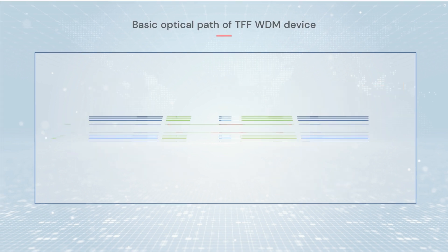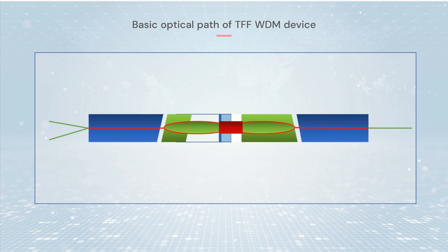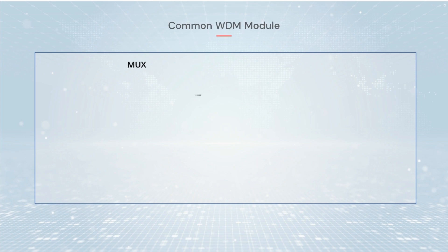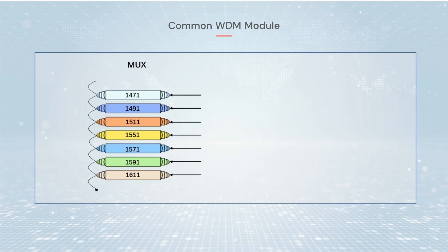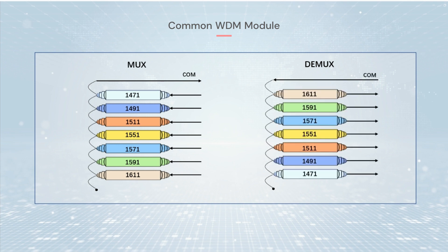WDM signals are input from the comm end. The TFF filter allows one wavelength to be transmitted while other wavelengths are reflected, so the wavelength is output from the transmission section while other wavelengths are output from the reflection end. In order to demultiplex all wavelengths, three-port devices need to be connected in series to form a WDM module.